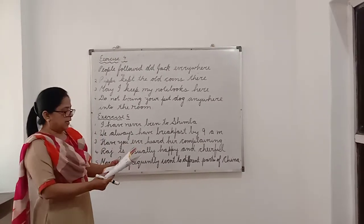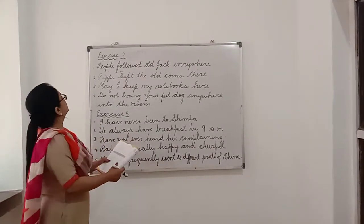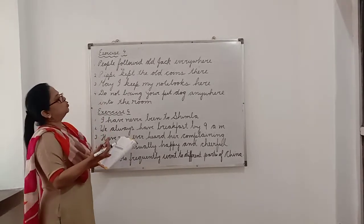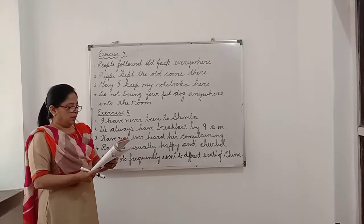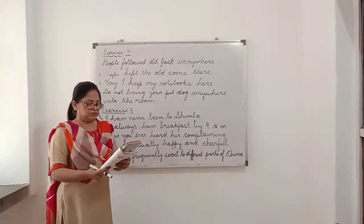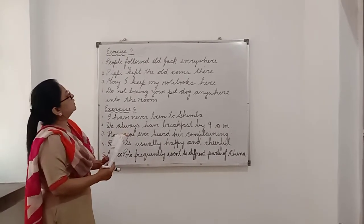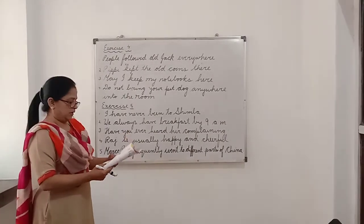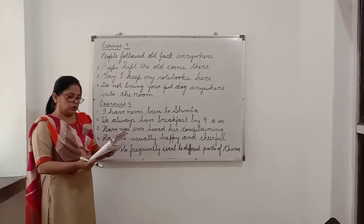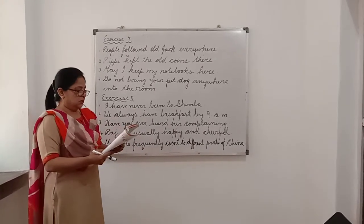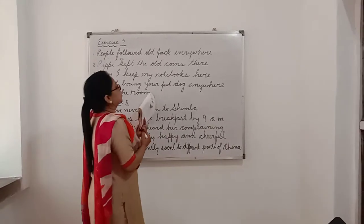Insert the adverbs given in brackets in the correct position and punctuate accordingly. The first one is: 'People followed old Jack' — and we have 'everywhere' in the bracket. So we write it: 'People followed old Jack everywhere.' and we put a full stop. The second one: 'We kept the old coins' — and we have 'there' in the bracket. So it becomes: 'We kept the old coins there.' The third one: 'May I keep my old books' — we have 'here' in the bracket. So we write: 'May I keep my old books here?' and we put a question mark.